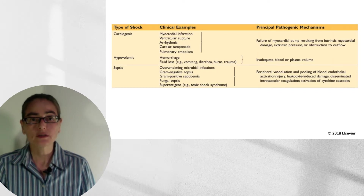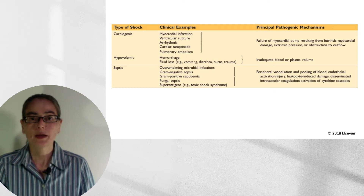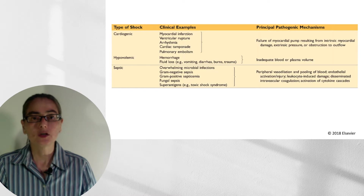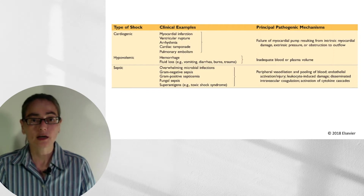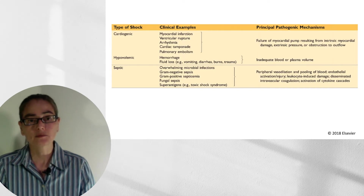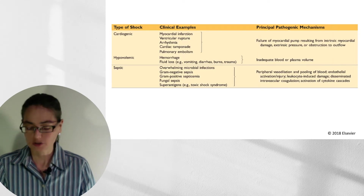Hypovolemic shock can be seen in cases of abundant hemorrhage or fluid loss due to vomiting, diarrhea, burns, or trauma — the mechanism being inadequate blood or plasma volume. Septic shock occurs with overwhelming microbial infections: gram-negative sepsis, gram-positive septicemia, fungal sepsis, and superantigens such as toxic shock syndrome. We're going to focus on the principal pathogenic mechanisms of septic shock for the next several slides.